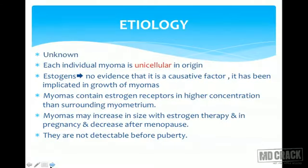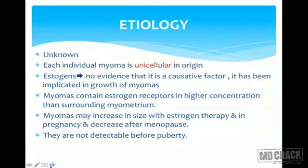The etiology of fibroid is unknown, but each individual myoma is unicellular in origin. Estrogen is not a causative factor as such, but it always enhances or is implicated in the growth of myomas. Myomas contain more estrogen receptors than surrounding myometrial tissue, increase in size with estrogen therapy and in pregnancy, and decrease after menopause — confirming they are estrogen dependent.